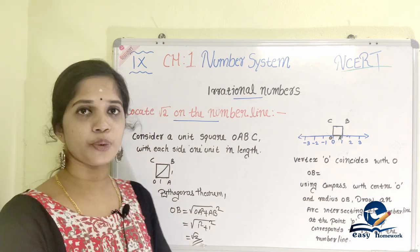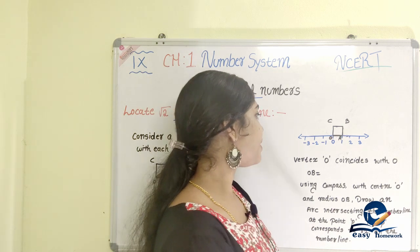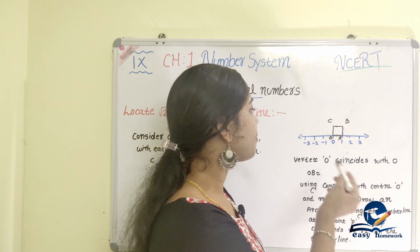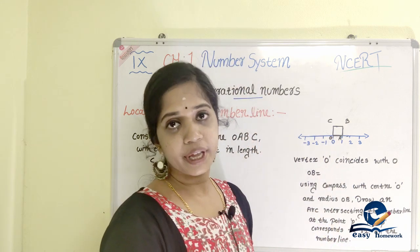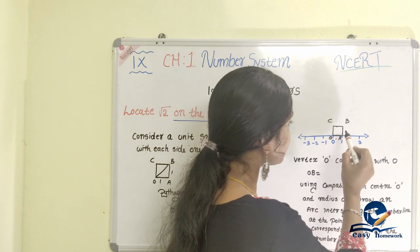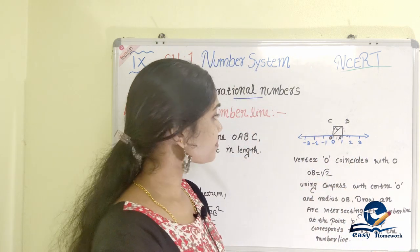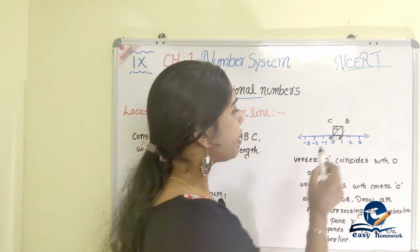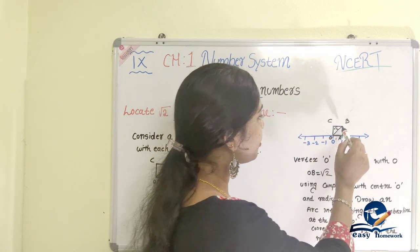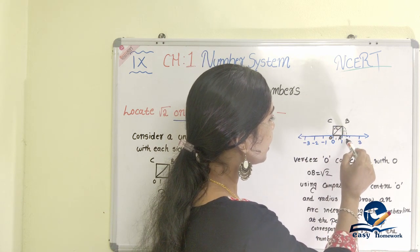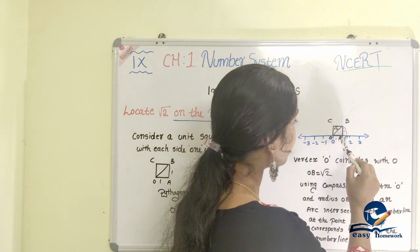Then we will find root 2 and locate it on the number line. We will consider a number line and line up a unit square. The vertex O is shown on the number line. Here we have one unit and here we have one unit. OB is root 2, and we use OB as the radius. This is the point of intersection with the number line.